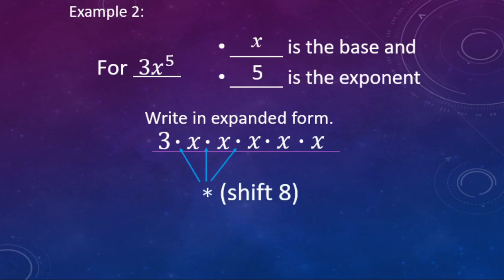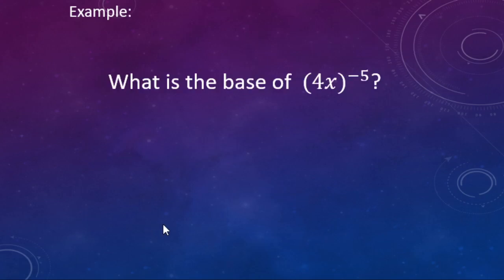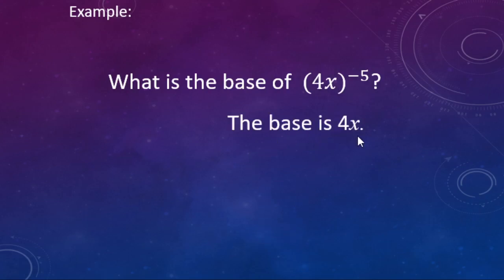If you're typing this on a computer, the multiplication symbol is the star button — on a ten-key it's between the divide and subtract symbols; on a keyboard like a Chromebook it's shift-eight. Bonus example: what is the base of (4x) to the negative fifth power? The base is what's directly to the left of the exponent, but the parentheses are a grouping symbol keeping the four and x together, so the base is 4x — whereas the last example with no parentheses, the base was just x.